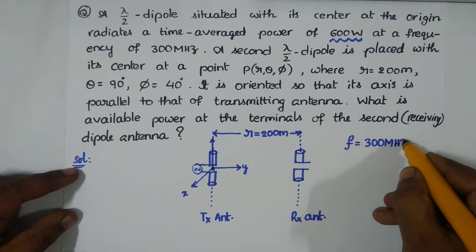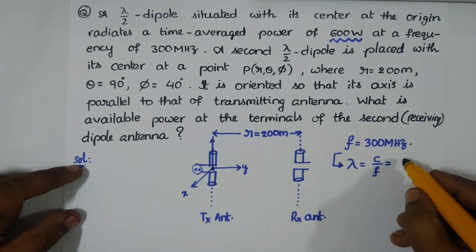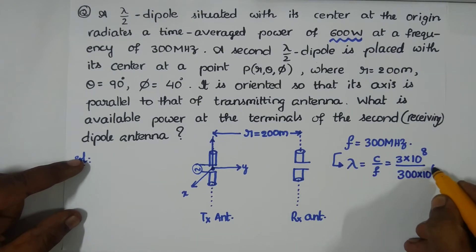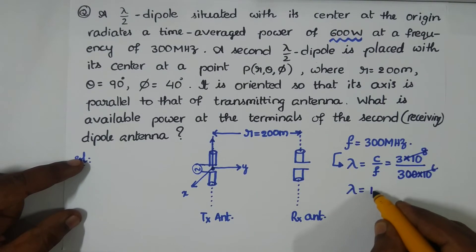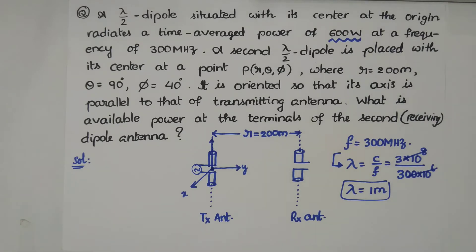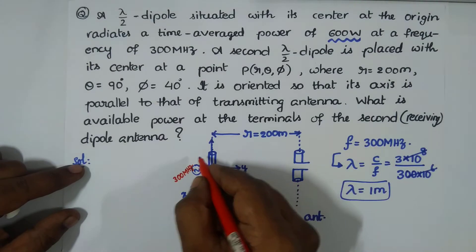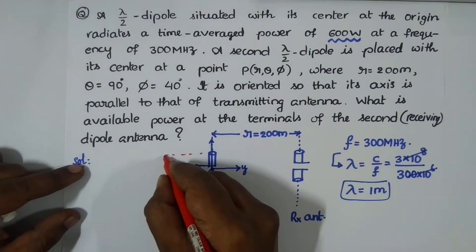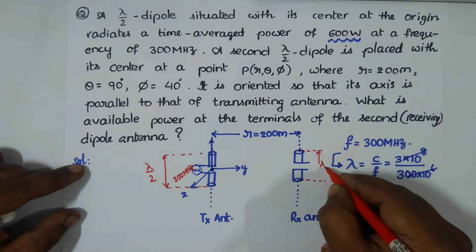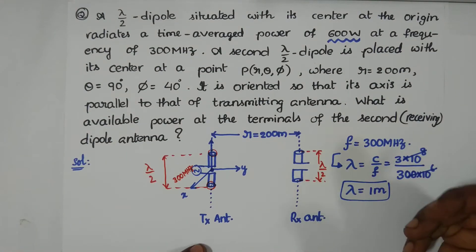The operating frequency is given as 300 MHz. From this we can find the operating wavelength: λ = c/f = (3×10⁸ m/s) / (300×10⁶ Hz) = 1 meter. So λ = 1 meter is our operating wavelength. The transmitter antenna has length λ/2, and the receiver antenna also has length λ/2 — pole 1 and pole 2 — hence the name dipole.